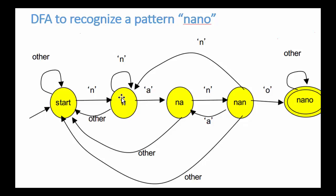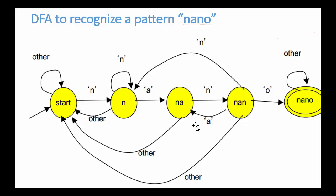Suppose you see an 'a' in the n state — then you go into the na state. If you see an n, you stay in n. If you see an a, you go to na. If you see anything other than n and a, you go back to start. When you're in the na state, if you see an n, you go to nan — that's the next state. But if you see anything other than n, you have to go back to the start state and start all over again.